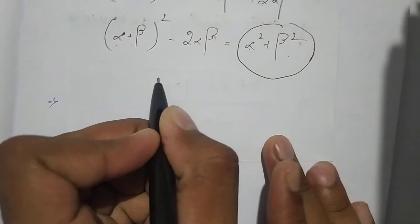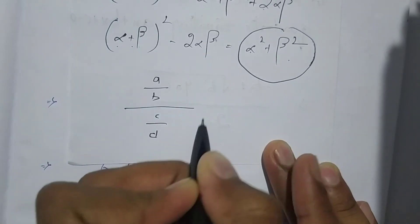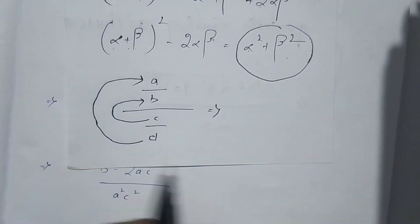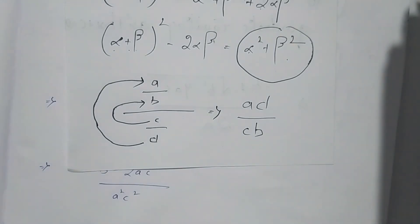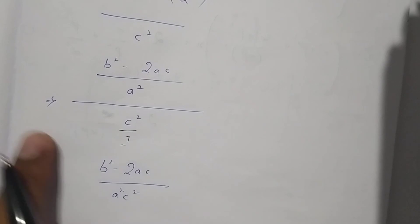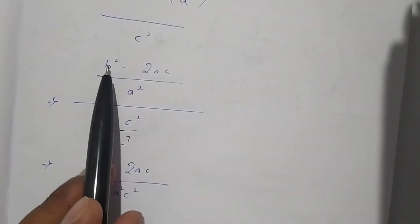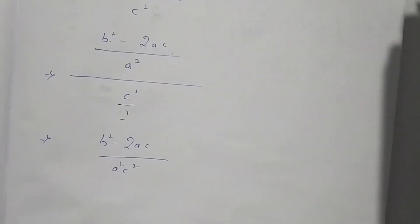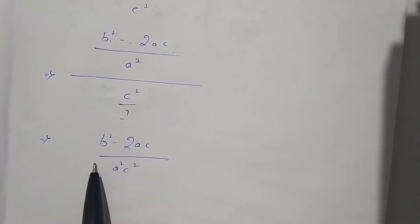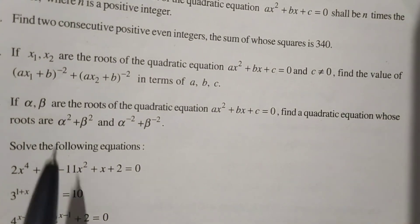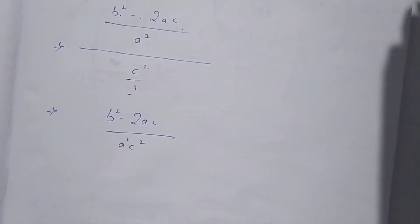Dividing (b² - 2ac)/a² by c² means multiplying by 1/c², giving (b² - 2ac) / (a²c²). Therefore the final answer is (b² - 2ac) / (a²c²), which is expressed entirely in terms of a, b, and c as required.